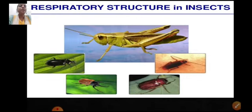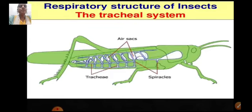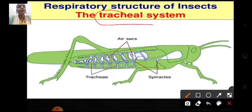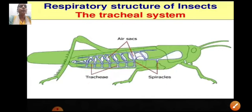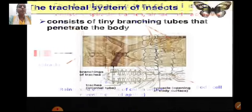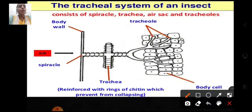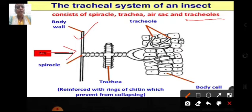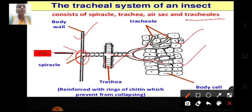The respiratory structure of insects is known as the tracheal system, consisting of trachea, air sacs, and spiracles. The tracheal system of an insect consists of spiracles — small holes on the body wall — then trachea, and further the trachea divides into thinner tubes known as tracheules. Air enters from the external environment through the spiracles. The trachea is reinforced with rings of chitin to prevent collapsing, similar to the c-shaped cartilaginous rings in the human trachea.